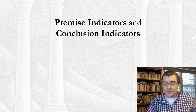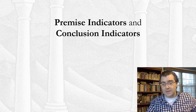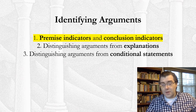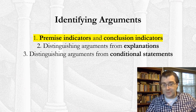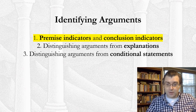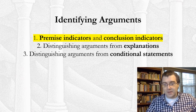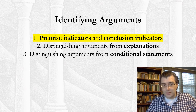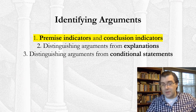Welcome back. In this set of slides I'm going to be talking about something we call premise indicators and conclusion indicators. This video is part of a three-part series which provides more information on identifying arguments — additional techniques and concepts that can help in determining whether or not some passage expresses an argument. This video covers premise indicators and conclusion indicators, and the other videos in the series are listed here on this slide.